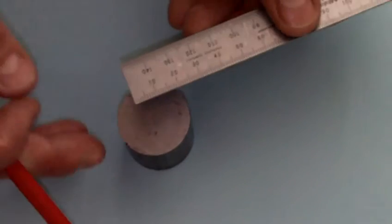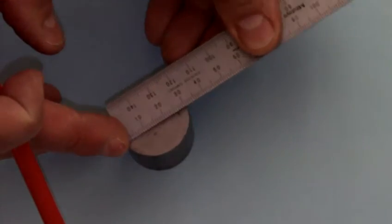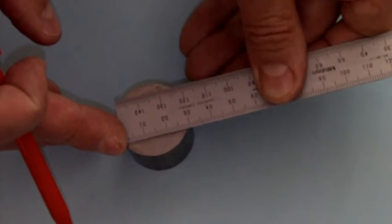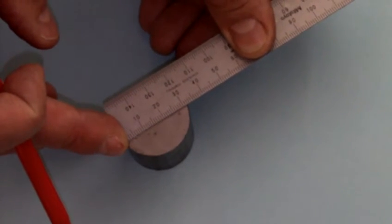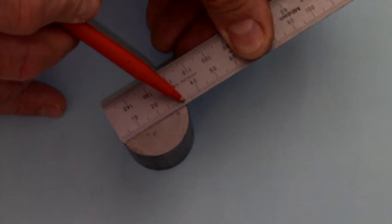We also can check diameters with this by sitting on the edge of a diameter and letting it move back and forth until we find the largest diameter. In this case, it looks very close to 32 millimeters.